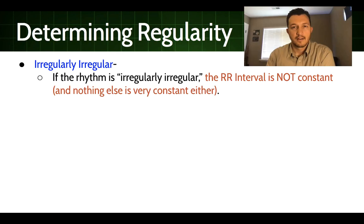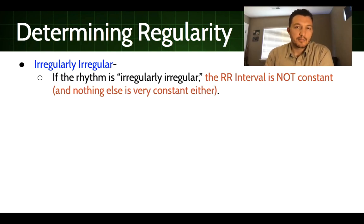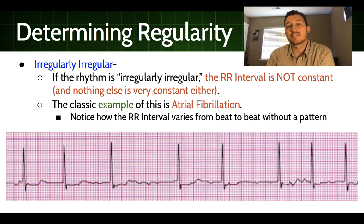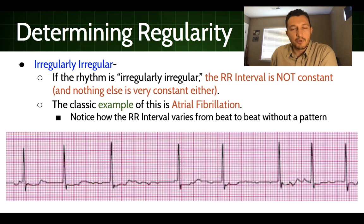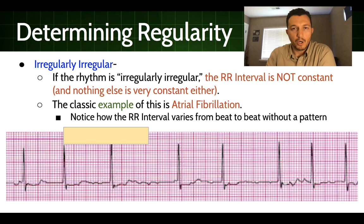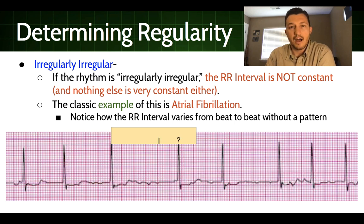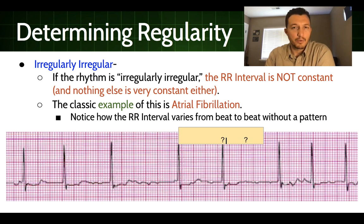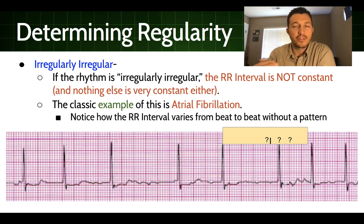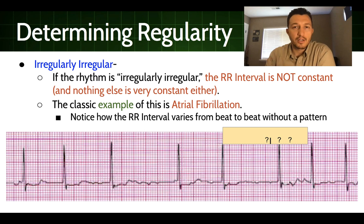Irregularly irregular—sometimes abbreviated I-squared—means the R-to-R interval is not constant and nothing else is really constant either. There's no true underlying pattern. The classic example of this is atrial fibrillation. Notice in our rhythm strip, using the paper method, we've got our R-to-R interval marked, and when we move this over, we definitely do not line up. We keep missing the mark at multiple locations. There is no regularity to this—the R-to-R interval is anything but constant—so we call this irregularly irregular.